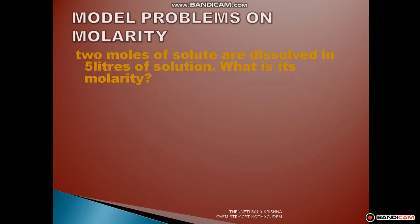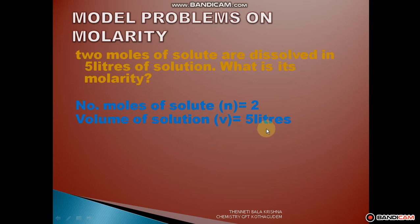Some model problems on molarity. Problem 1: Two moles of a solute are dissolved in 5 litres of solution — what is its molarity? Given data: number of moles N is equal to 2, volume of solution V is equal to 5 litres. Our aim is to find molarity M. Using the formula M is equal to N by V, we substitute: M is equal to 2 by 5, that is 0.4. So the molarity is 0.4 molar.